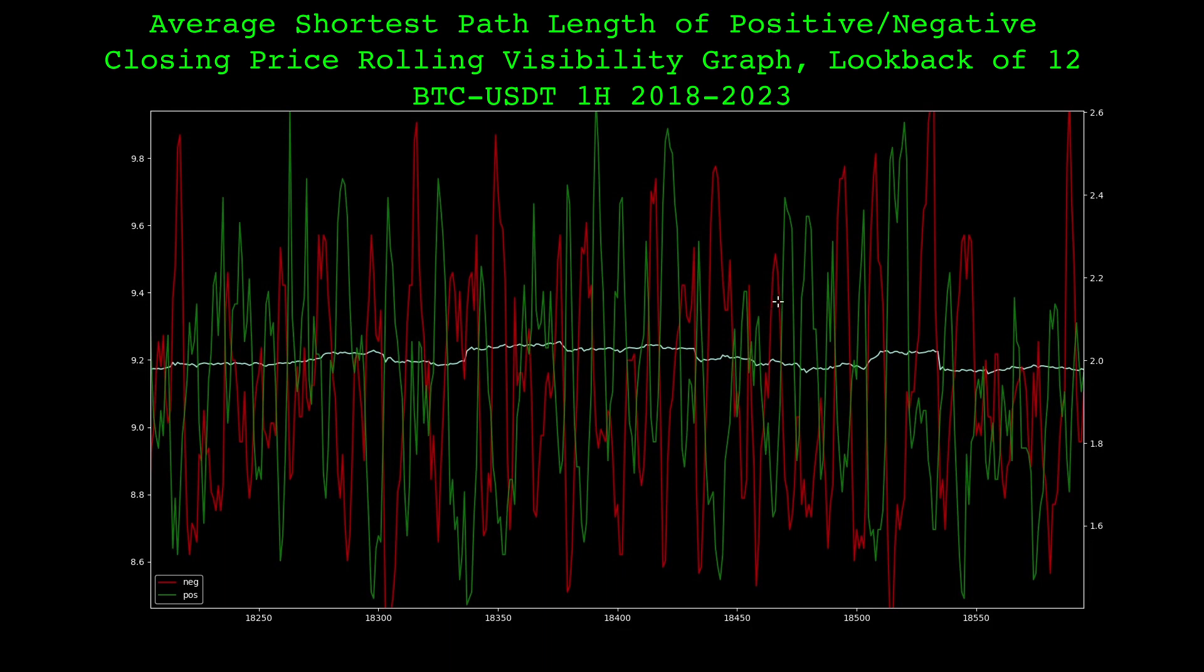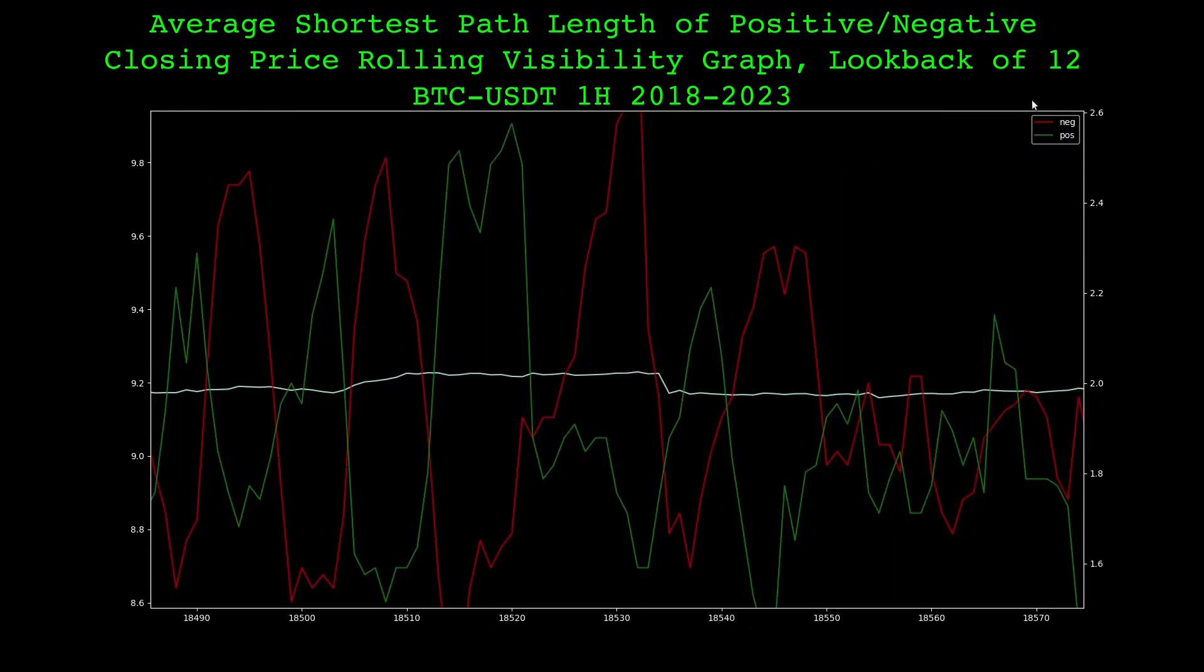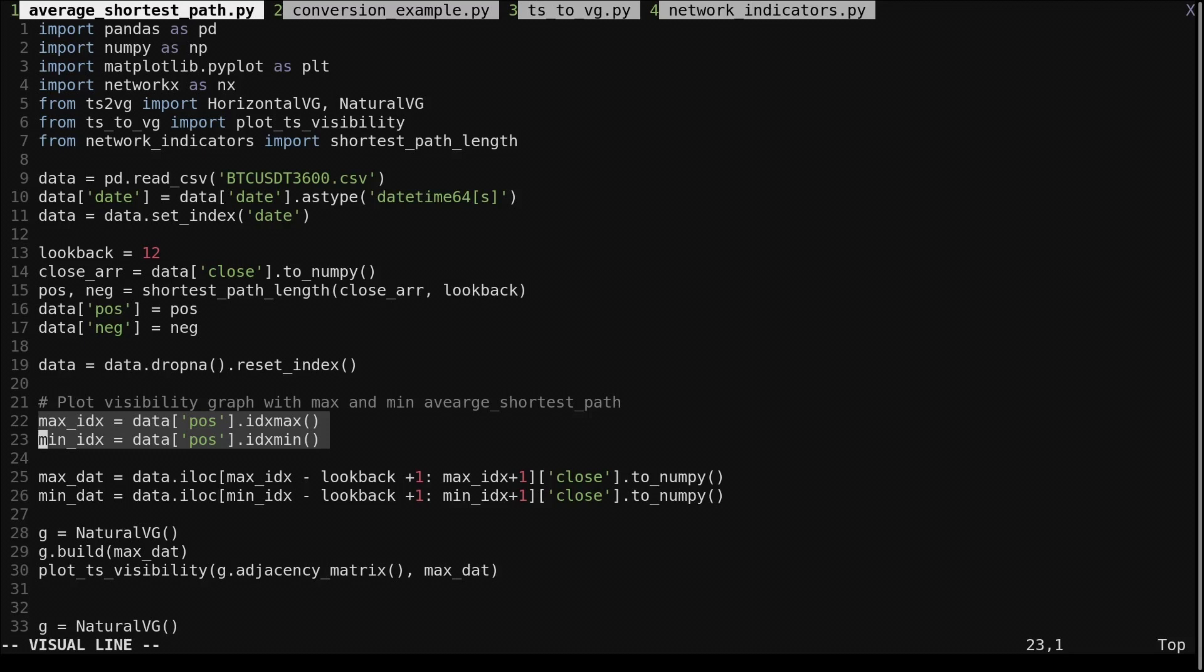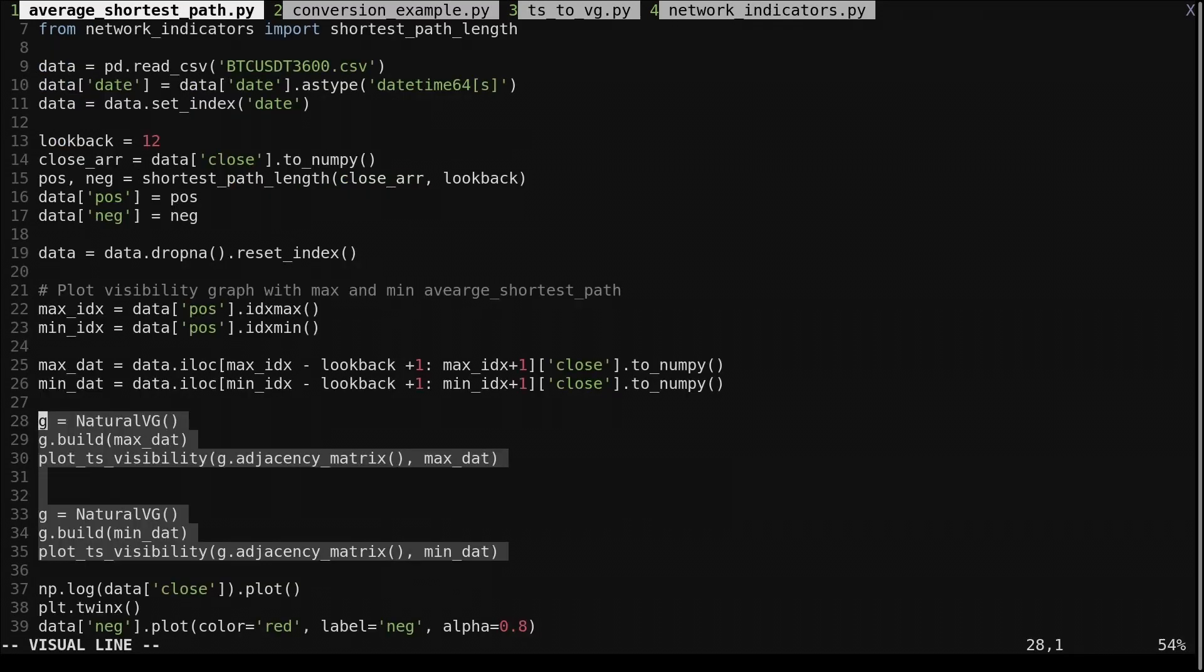To help answer this question, let's look at the visibility graph that produced the maximum and minimum value of the average shortest path length. We find the index of the maximum and minimum value. We then get the preceding values as specified by the lookback. Then we build the visibility graph and plot them.